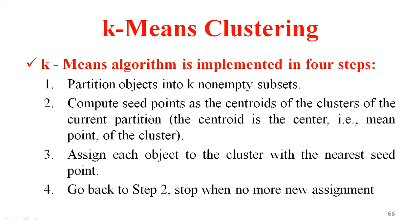The centroid is the center — the mean point of the cluster. Identify the mean value of the cluster, then assign each object to the cluster with the nearest centroid. Nearest to centroid points are assigned to one cluster, then go back to step two. Stop when no more new assignments are made. In this way, you perform the clustering.